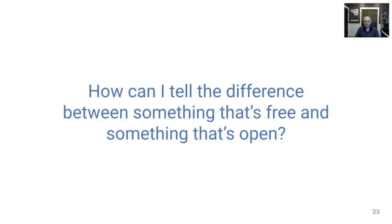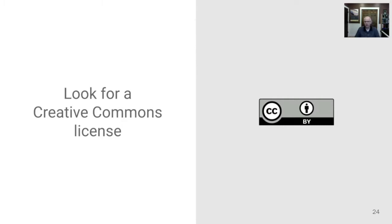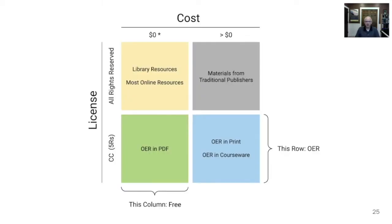So how can you tell the difference between something that's free and something that's actually open? Generally speaking, you want to look for a Creative Commons license. The Creative Commons license indicates that you have permission to engage in these five R activities. As you're thinking about the difference between things that are free and things that are open, it's really useful to consider this two-by-two table. In the columns, we have things that are either free or that cost money, and in the rows, we have things that are all rights reserved versus things that are openly licensed using a Creative Commons license that grants you the five R permissions.